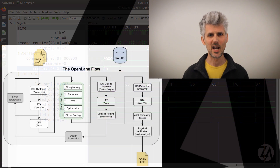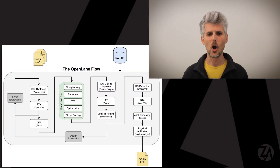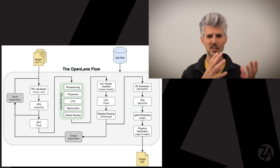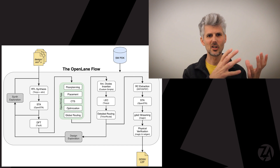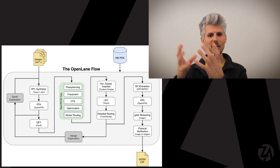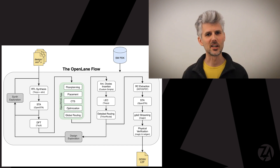Then we move on to Openlane — that's the open source ASIC tool flow used to take our digital design and turn them into the files we need to send to the chip factory.